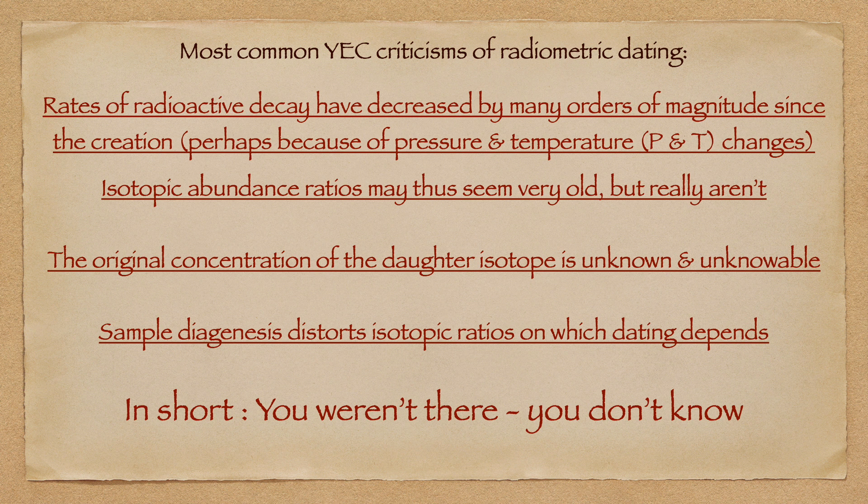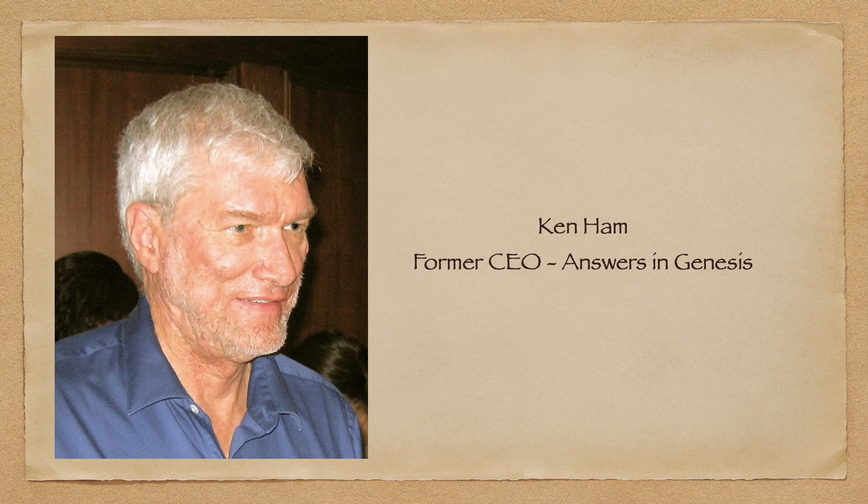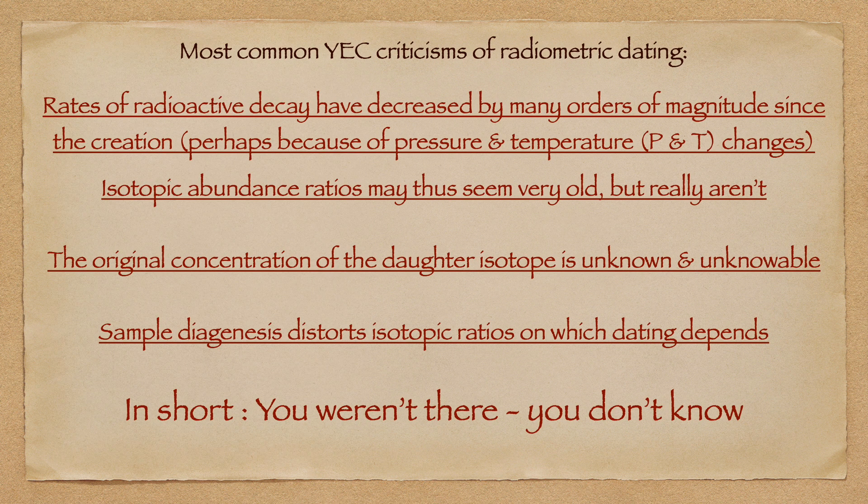Basically, these all boil down to the same point: we're talking about the past when we weren't there. We didn't see those tree rings actually forming. We didn't see those layers being laid down. It's like the dating methods — you're assuming things in regard to the past that aren't necessarily true. Well, of course I wasn't there. If I was there, I wouldn't need the bloody sample dated, would I? I'd know how old it was.